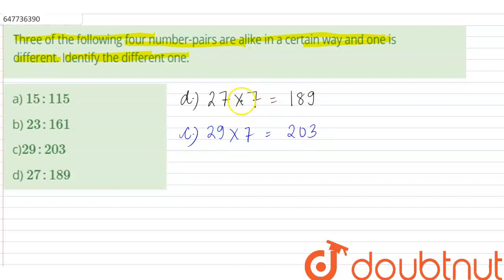Can we say that multiplying the first number by 7 gives us the second number? Because we have the first number, that is 27,